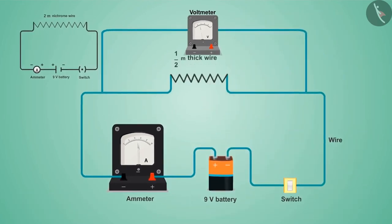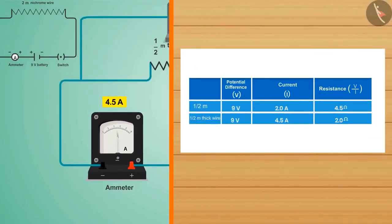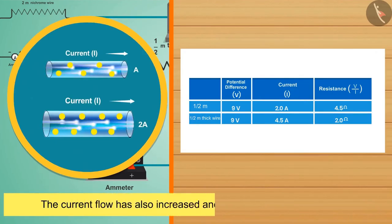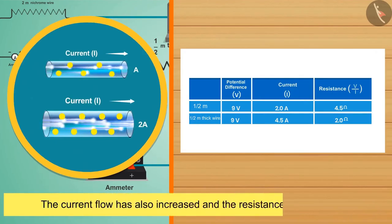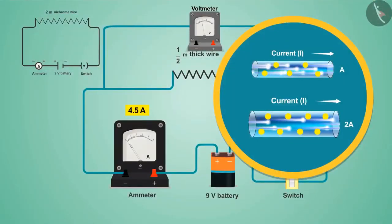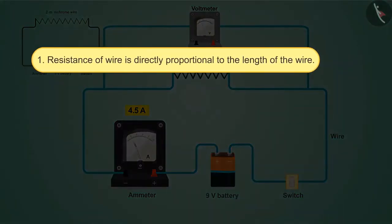In the second case, we put a thick wire and compare the reading of the ammeter with the previous case. We saw that there is an increase in the value of the ammeter reading. As the thickness of the wire is increased, the current flow has also increased and the resistance has decreased. In other words, the thicker the wire, the more cross-sectional area the wire has.